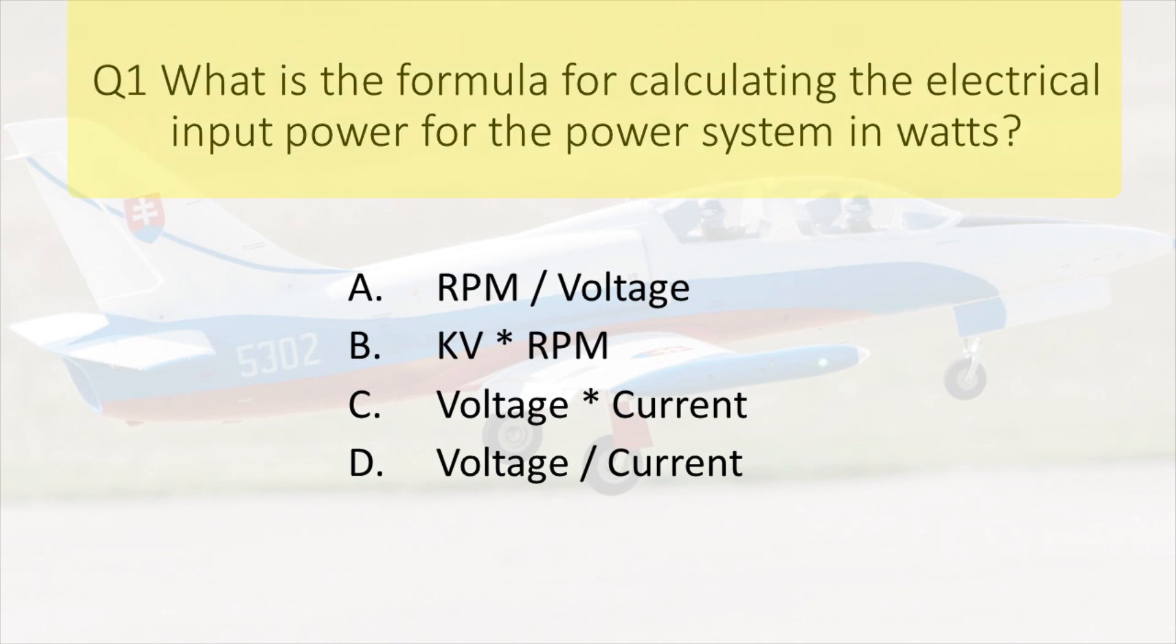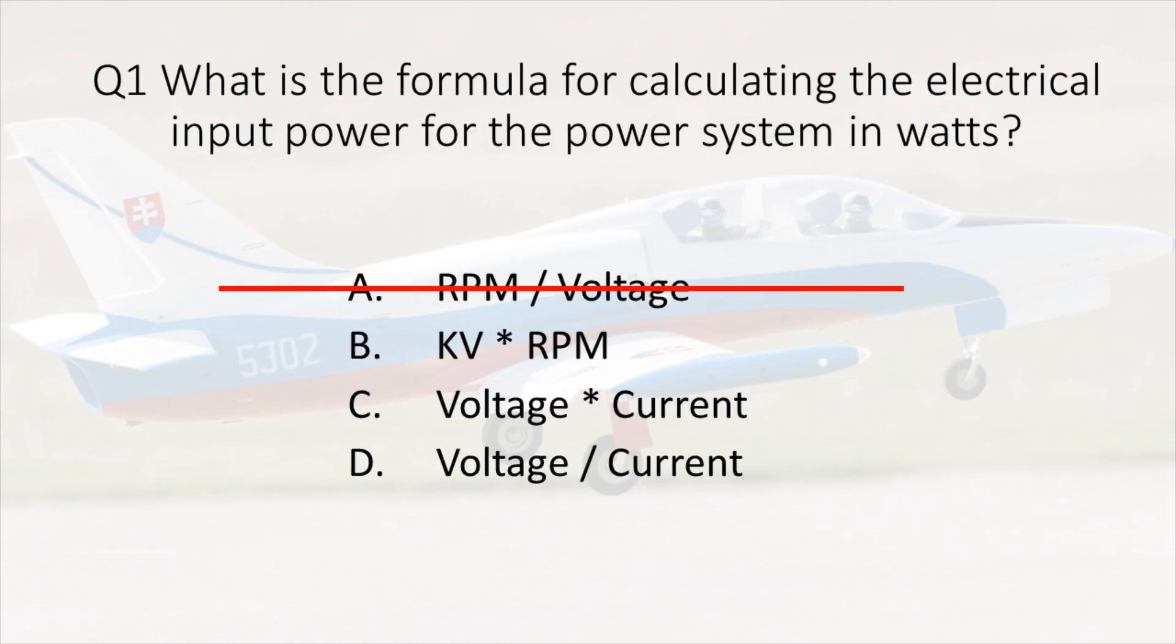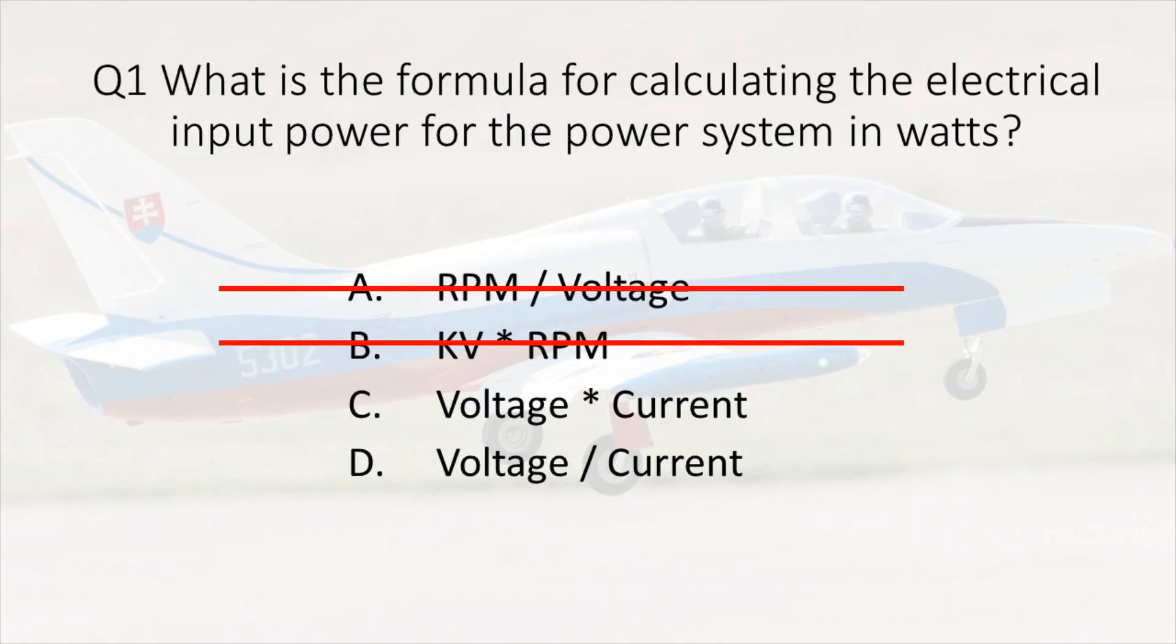First question is what is the equation for the input power to a brushless power system? The input power being the electrical input power. Answer number one is RPM divided by voltage. This one is not correct. RPM per volt is actually a good unit for KV and is not a power equation. Answer two is KV multiplied by RPM. KV is RPM per volt. If we multiply it by RPM, we essentially get RPM squared per volt, which is not a unit of power as well.